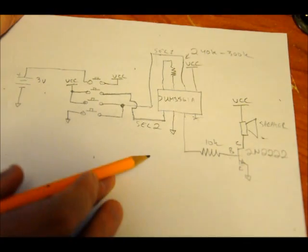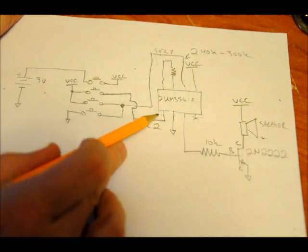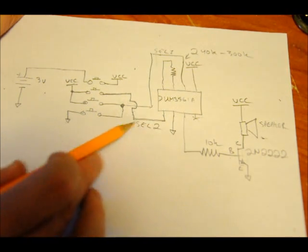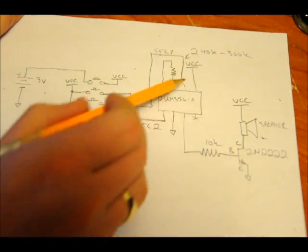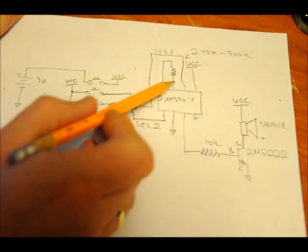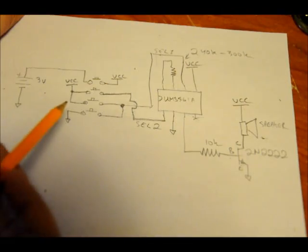Now first I'll talk about the pins of the chip. Your indicator is here that this is pin one. Pin one is our selector two pin, pin two is ground, pin three is our output. Pin four is not used. Pin five is connected to the three volt supply. Pin six is our selector one pin and pin seven and eight are our oscillator pins.